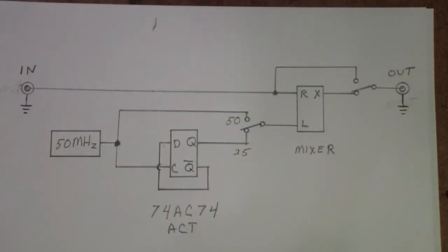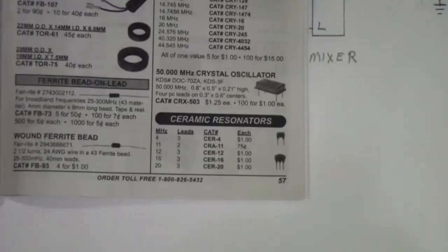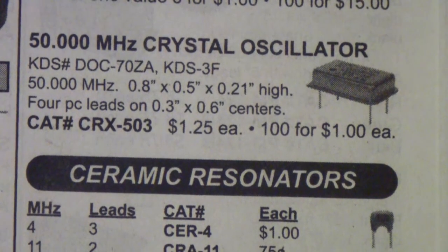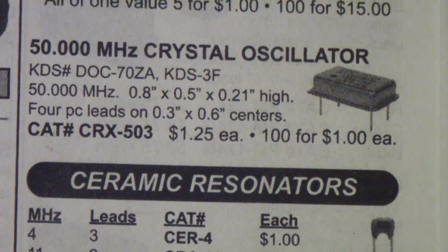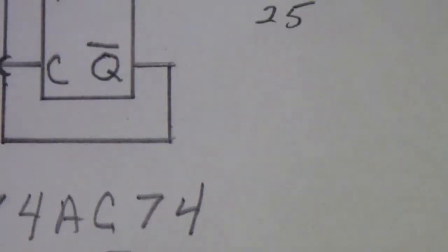In terms of the oscillator, I've already showed in the original video this 50 megahertz crystal oscillator that All Electronics sells for a dollar and a quarter. So you're up to about, with shipping, probably about $15 at this point.